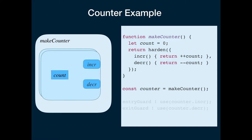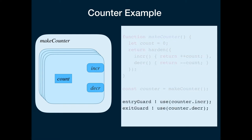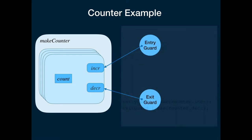Every time we call make counter we get a distinct instance, and each of these instances is isolated from the others. For example, maybe we want to keep track of the number of people inside a room by having an entry guard count up when people are entering the room, and an exit guard count down when people exit. So we can give the entry guard access to the Inker function and the exit guard access to the Decker function. The result is that the entry guard can only count up, and the exit guard can only count down.